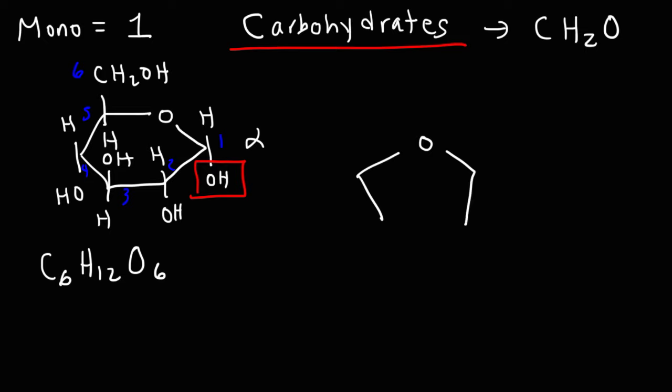Fructose forms a five-membered ring in its cyclic form, but fructose has the same chemical formula as glucose. Fructose is a ketohexose. In its linear structure, it forms a ketone functional group.